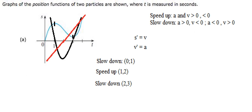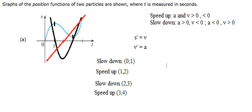The next one, from 3 to 4, the dark line is positive and the red line is also positive, so this is speeding up — interval 3 to 4. And that is the end. Thank you for watching, see you.